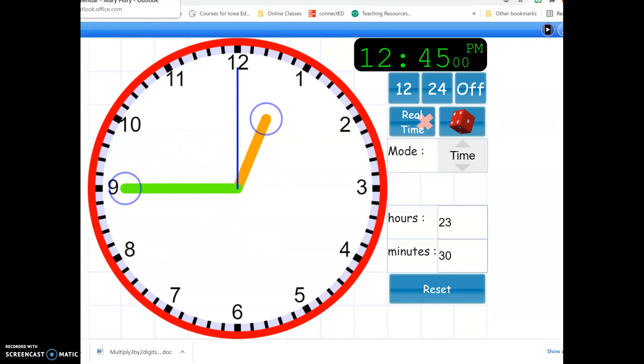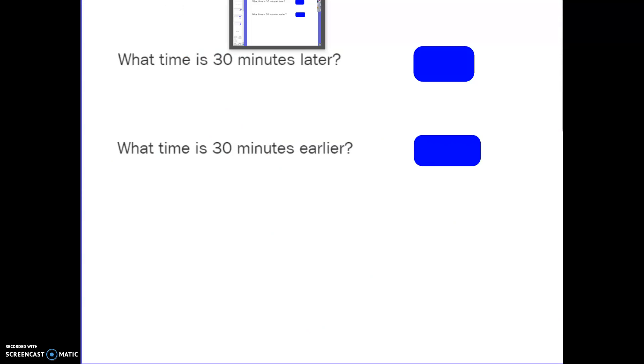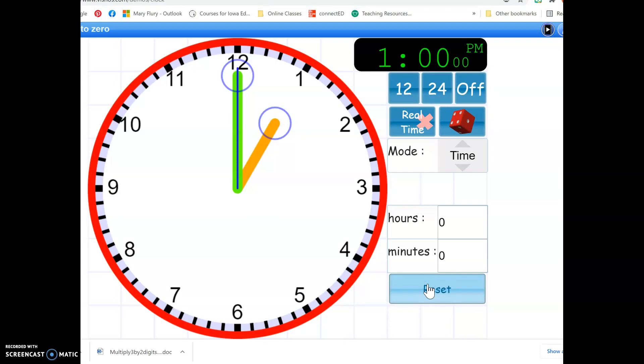Now we're going to talk about what's 30 minutes later than one o'clock. So 30 minutes later would be 30 minutes after one. Between each hour number there are five tick marks, so I can just count these by five: 5, 10, 15, 20, 25, 30. So 30 minutes after one o'clock is 1:30.